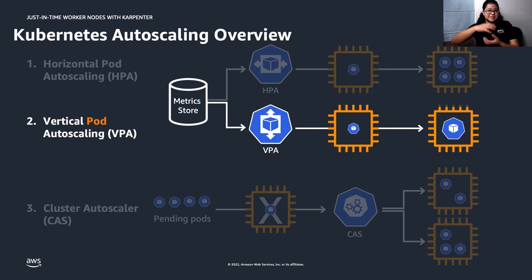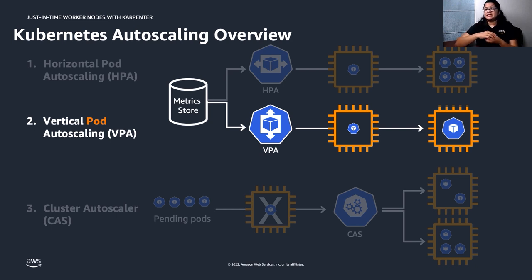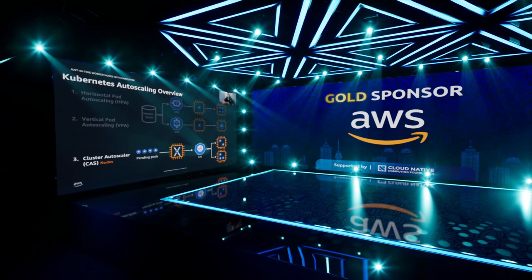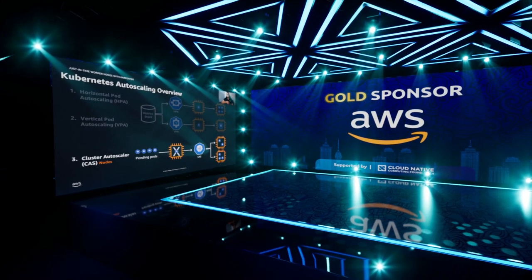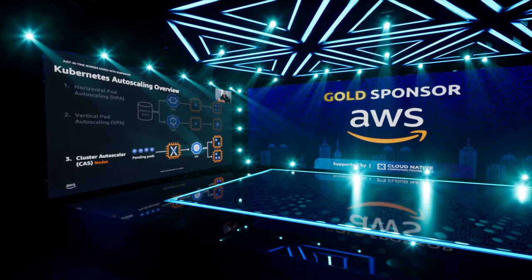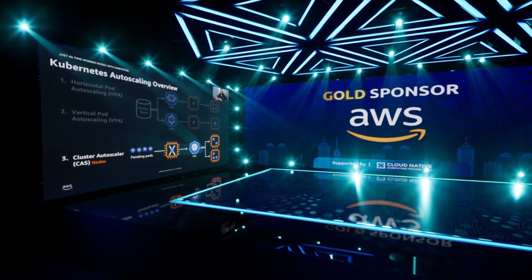With vertical scaling, as the name suggests, you add capacity to the same resource. The Kubernetes VPA automatically adjusts the CPU and memory reservation for your pods to help right-size your applications. And finally, the Kubernetes Cluster Autoscaler, which is a popular cluster autoscaling solution maintained by SIG Autoscaling.